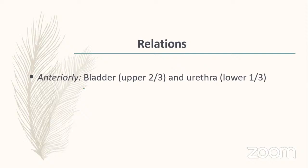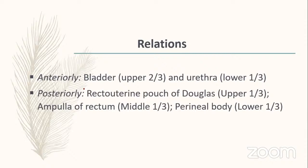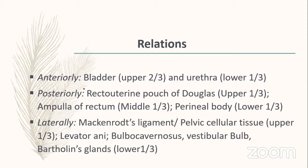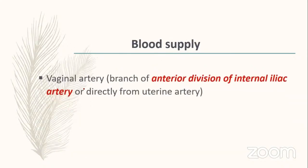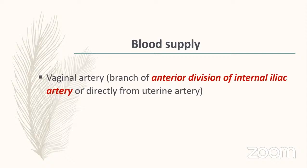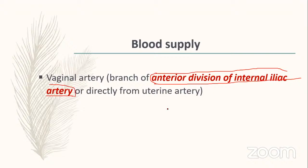Relationships of the vagina: anteriorly, the upper two-thirds relate to the bladder and the lower one-third to the urethra. Posteriorly, the upper one-third relates to the recto-uterine pouch of Douglas, middle one-third to the ampulla of rectum, and lower one-third to the perineal body. Laterally, the upper one-third relates to Mackenrodt's ligament and levator ani.